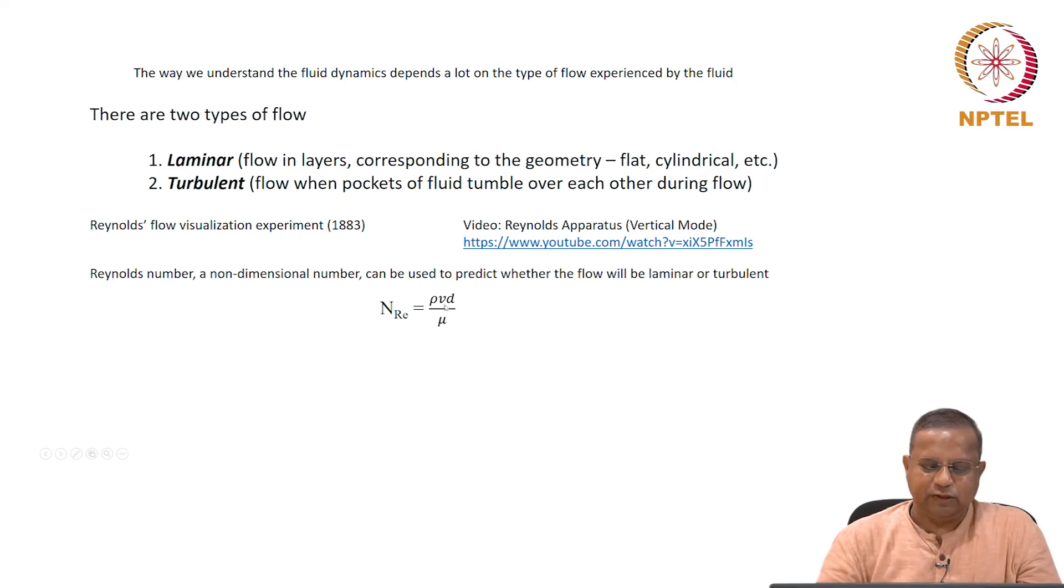If it happens to be a tube, the characteristic dimension is the diameter of the tube. If it is flow over a flat plate, it could be the distance along the flat plate and so on. So essentially this is the velocity, the density of the fluid, the viscosity of the fluid, the velocity of flow, and a characteristic dimension.